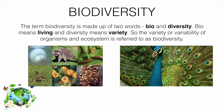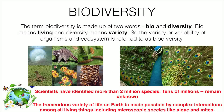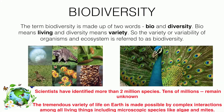Scientists have already identified more than two million species on the earth, and there are more than tens of millions of species which are still unknown to scientists. We are having a tremendous variety of life on the earth, and this complex system makes up the biodiversity available on the earth.